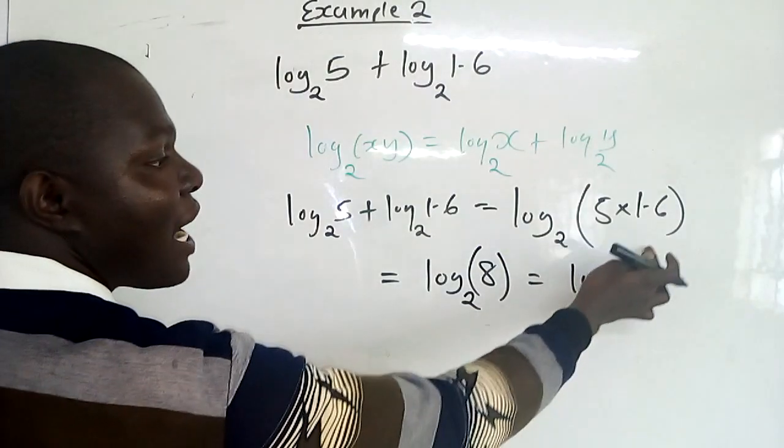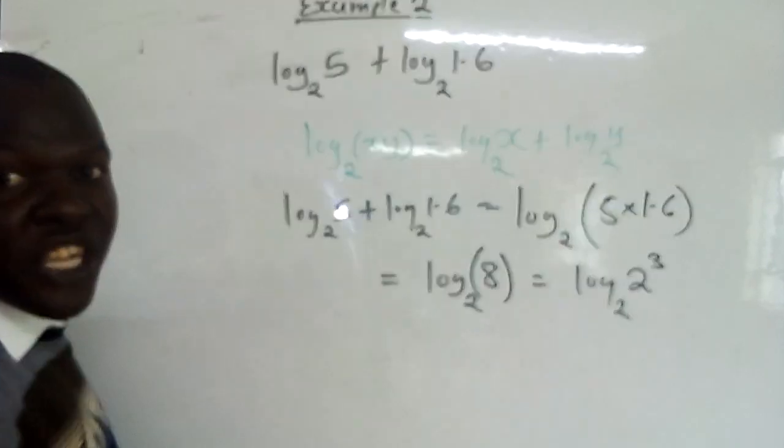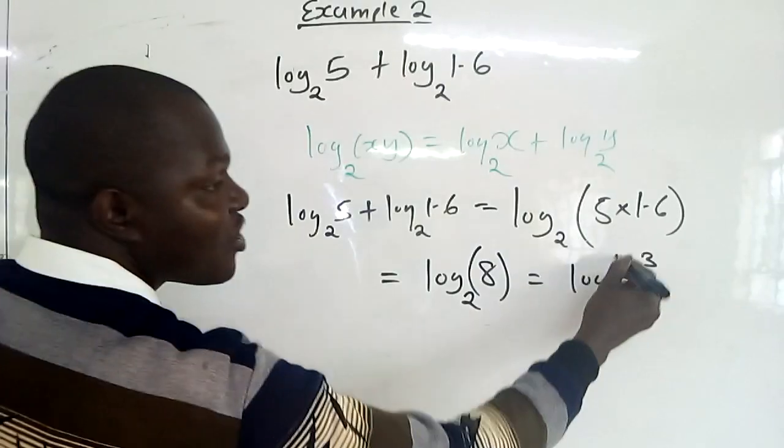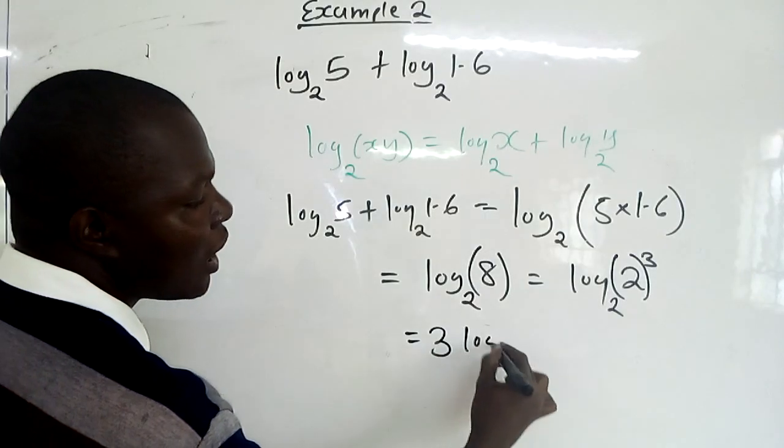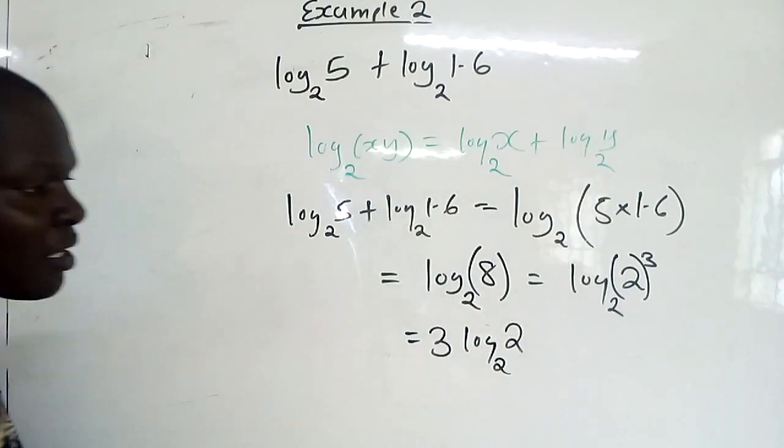And you see the power is written as the coefficient of the log. So this power 3, which is the power for everything here, this 3 becomes the coefficient. So it is 3 log₂2.